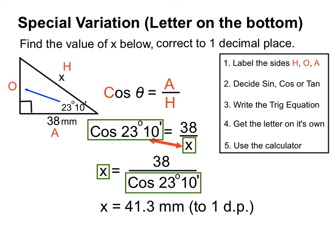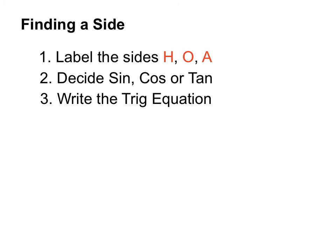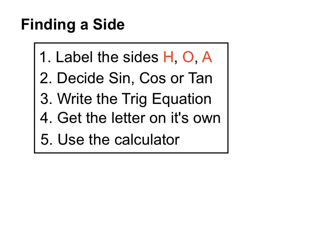Let's run through the recap of finding a side. We label the sides carefully, then from the sides involved in the question we decide whether to use sine, cos or tan. We write out the trig equation and substitute all the numbers. We get the letter on its own — usually by multiplying both sides, but we saw the special variation where we swap places and divide. Then we use the calculator and round off carefully.